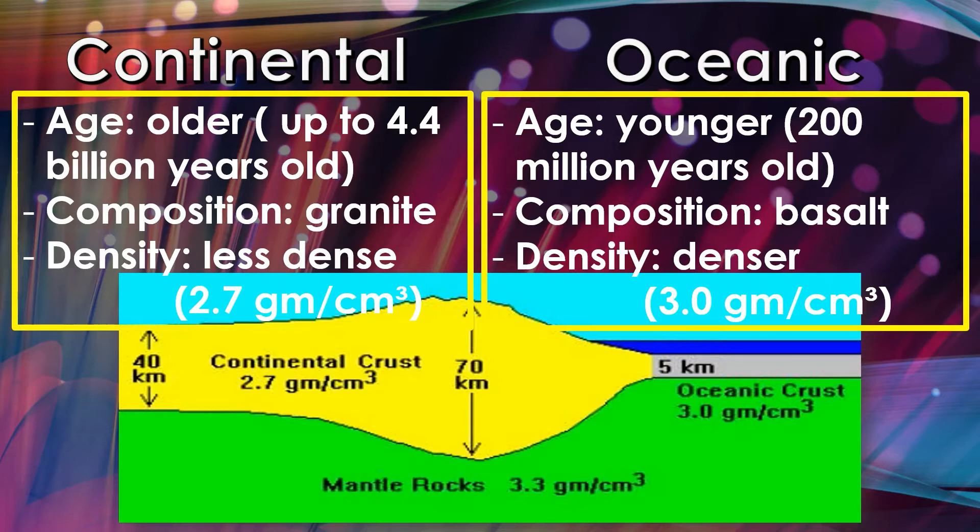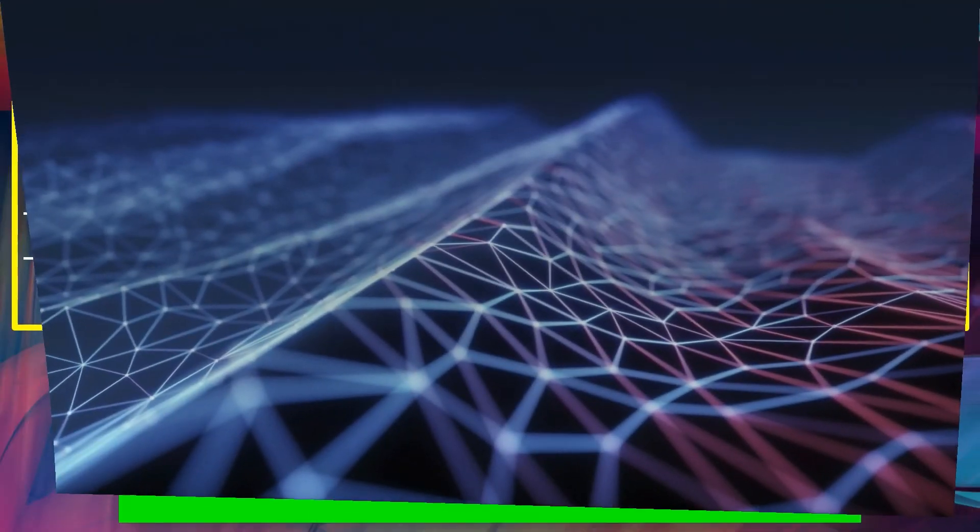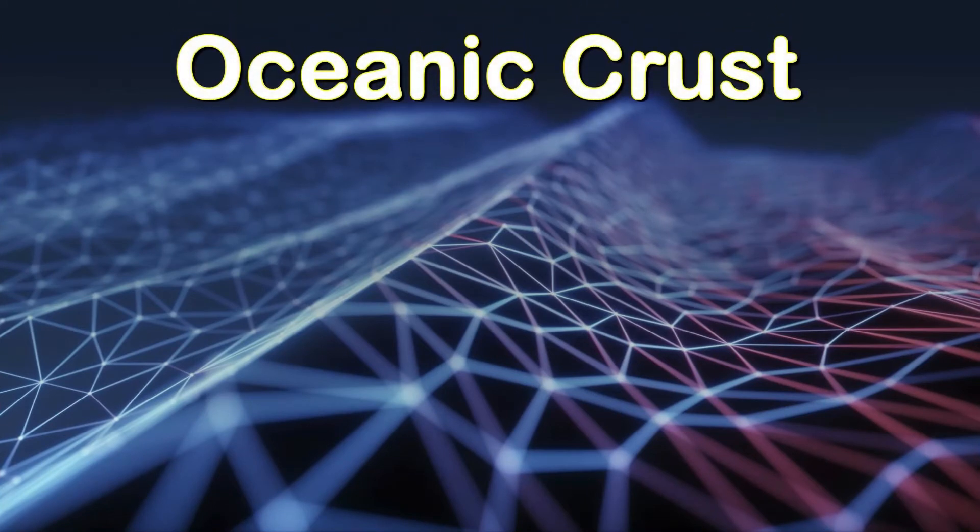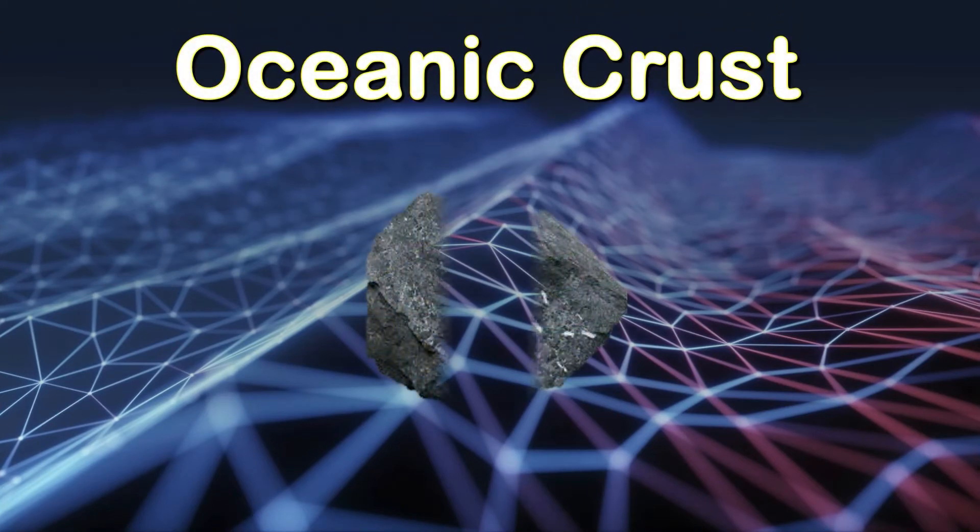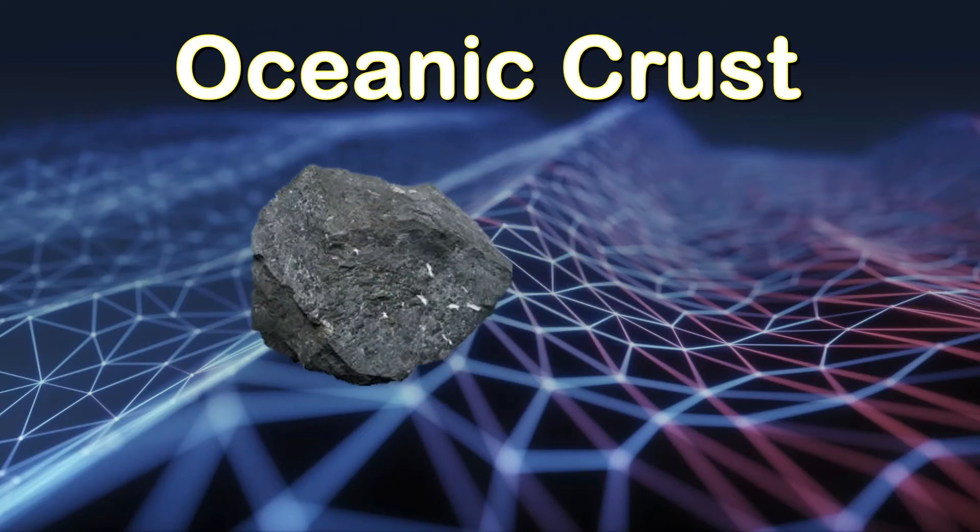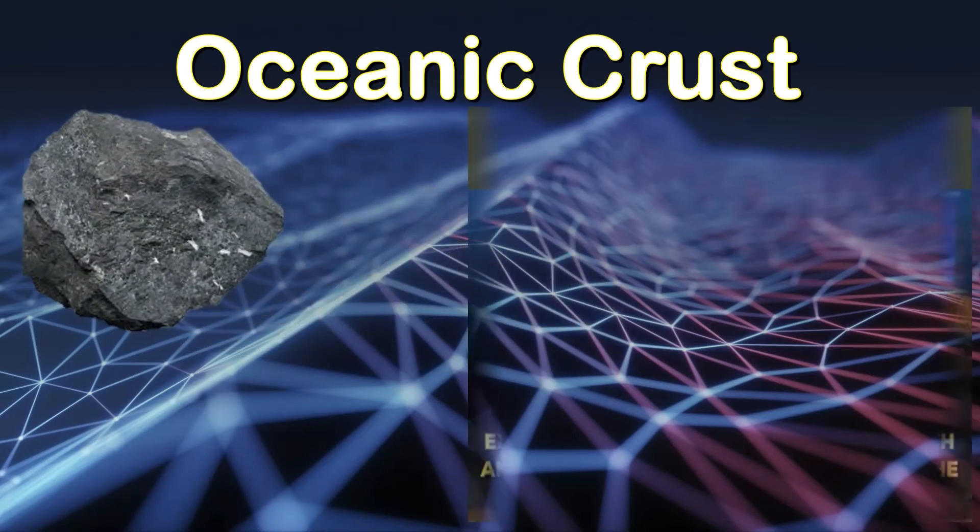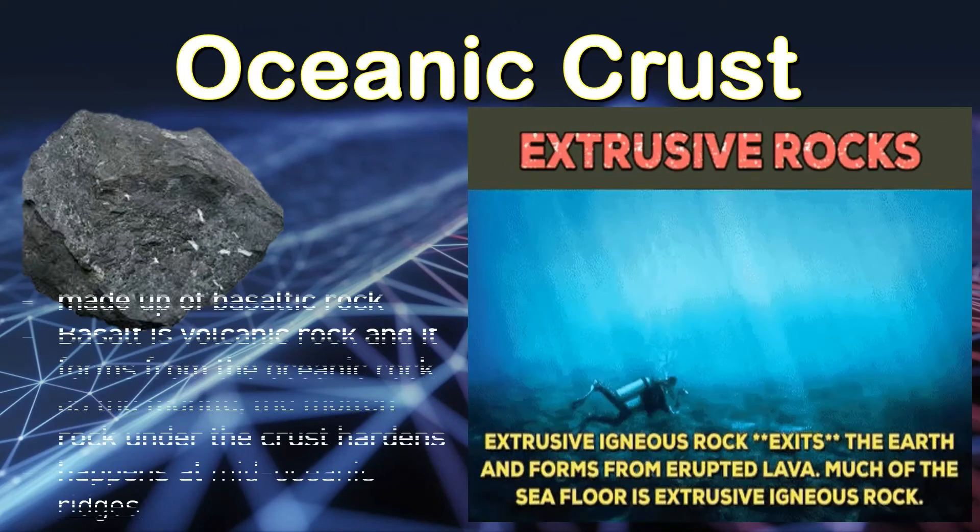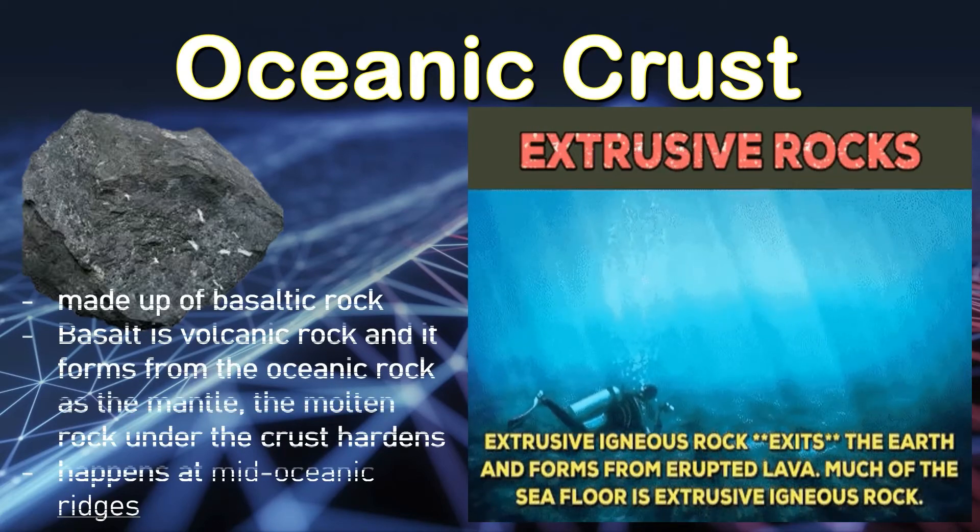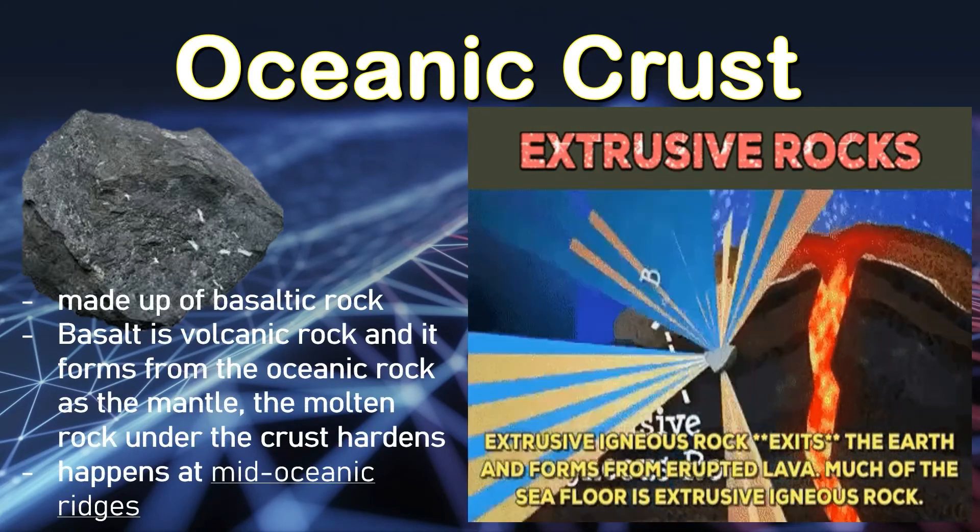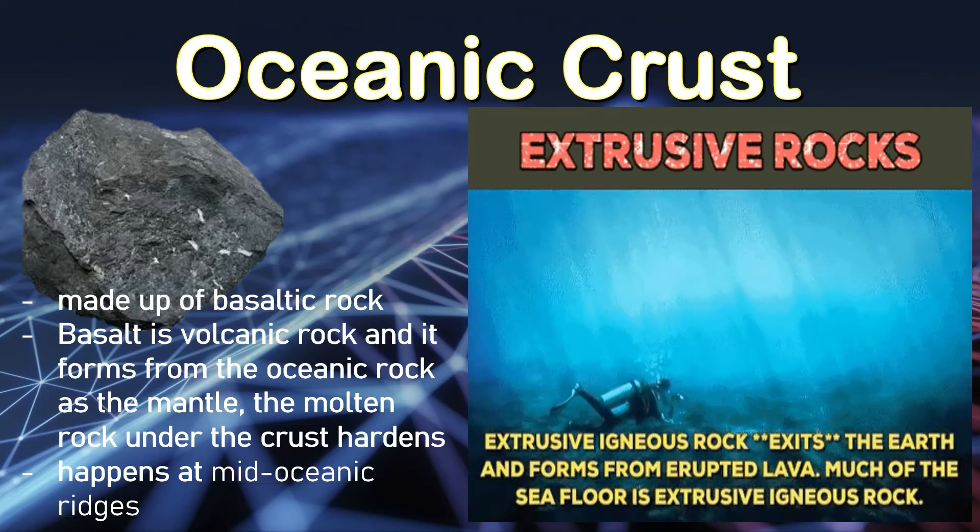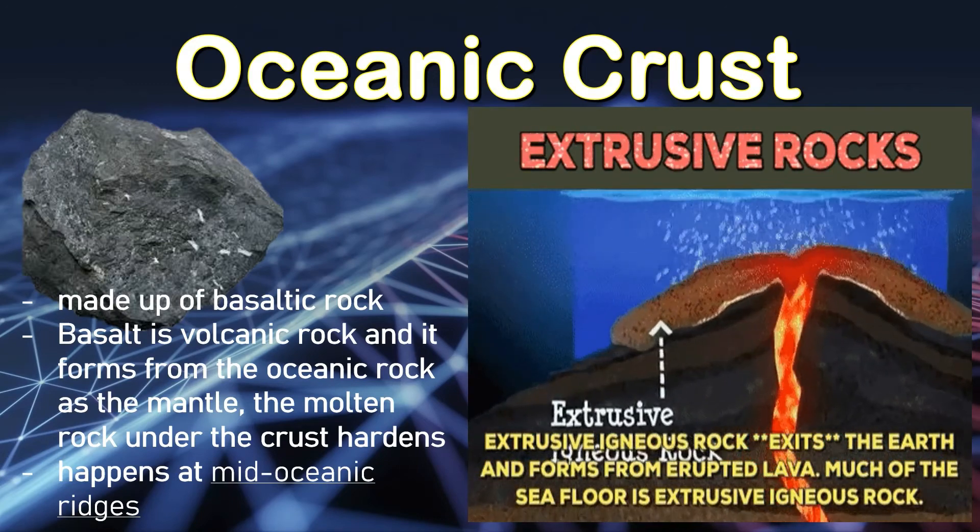How do basalt and granite form? Let us know how. First is oceanic crust. It is made mostly of basaltic rock, and basalt is a volcanic rock that forms the oceanic crust as the mantle, the molten rock under the crust, wells up and hardens. This happens at mid-ocean ridges where the crust is being pulled apart due to the motion of the tectonic plates. Oceanic crust is about 4 miles thick.